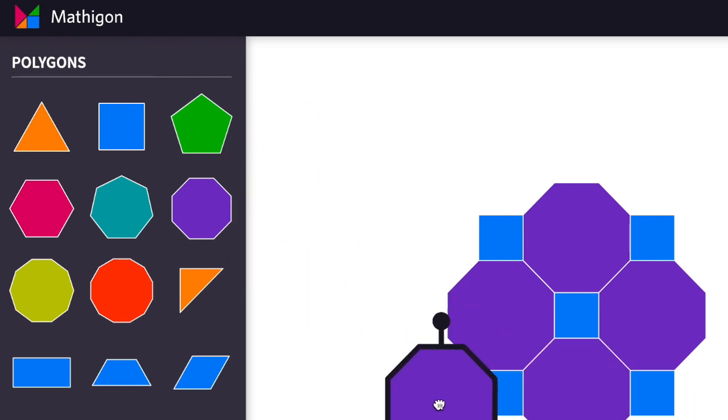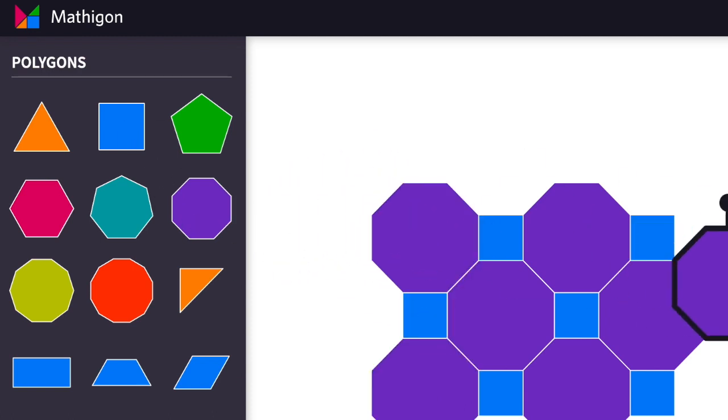You can see with this arrangement of octagons and squares, that no matter which vertex you pick, you'll always be able to see one square and two octagons as you move around clockwise.